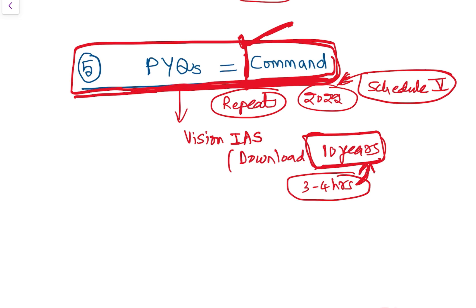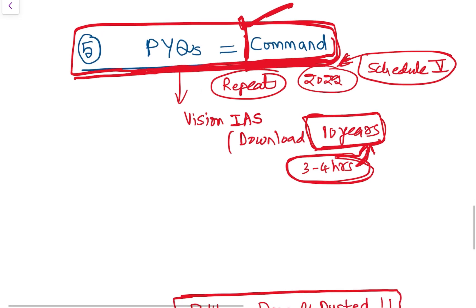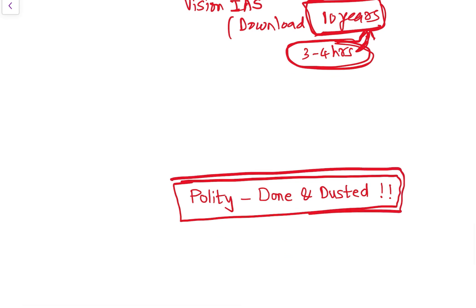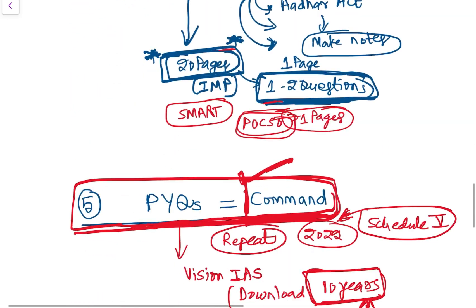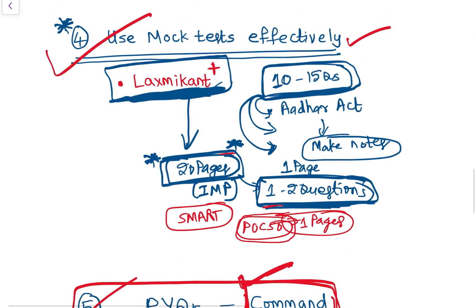From previous year questions, you will also get to know how question options are framed and from which topics questions are asked. This gives you a clear idea of what to read, what not to read, what to remember, and what not to remember. So use previous year questions well. And that is it — polity is done and dusted if you follow all these things: revise regularly, use mock tests effectively with the Lakshmikant Plus strategy of ten to twenty pages of notes on topics not covered in Lakshmikant.